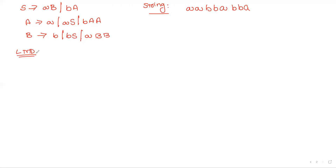In leftmost derivation we start from the start symbol S. The first character of our string is 'a'. From S we have two productions — one starting with 'a' and one starting with 'b'. Since our string starts with 'a', we select the production that starts with 'a'. So S → aBbA is chosen, and the 'a' is fixed.